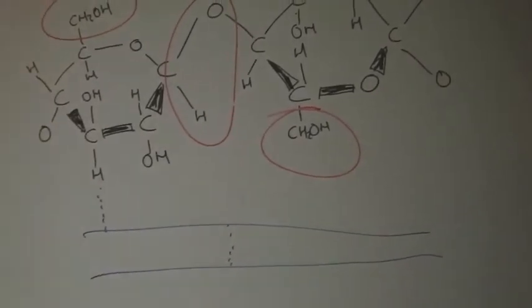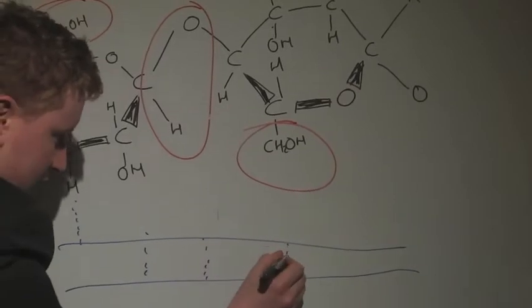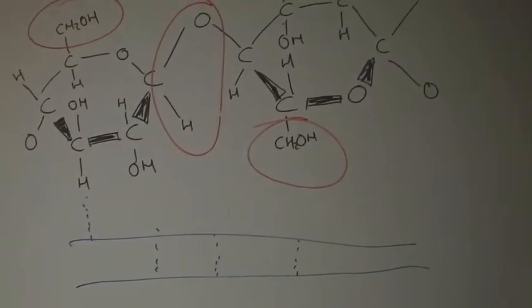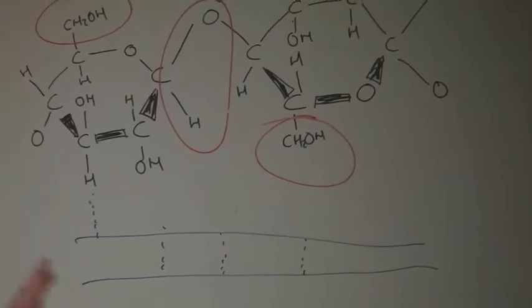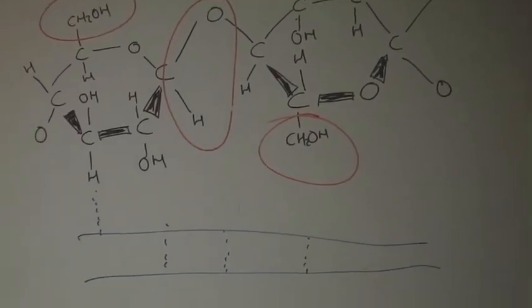One of the reasons that cellulose is so strong is the sheer number of hydrogen bonds. One hydrogen bond by itself is very weak, but there are lots and lots in one molecule of cellulose, so the overall strength is greatly increased.